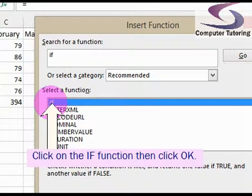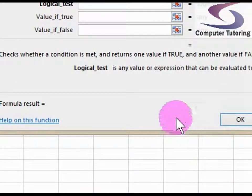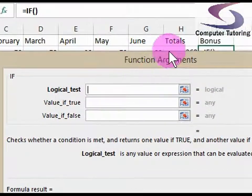Here we go. I've got IF, so make sure IF is selected. Then click on OK and it will give up the function argument box.